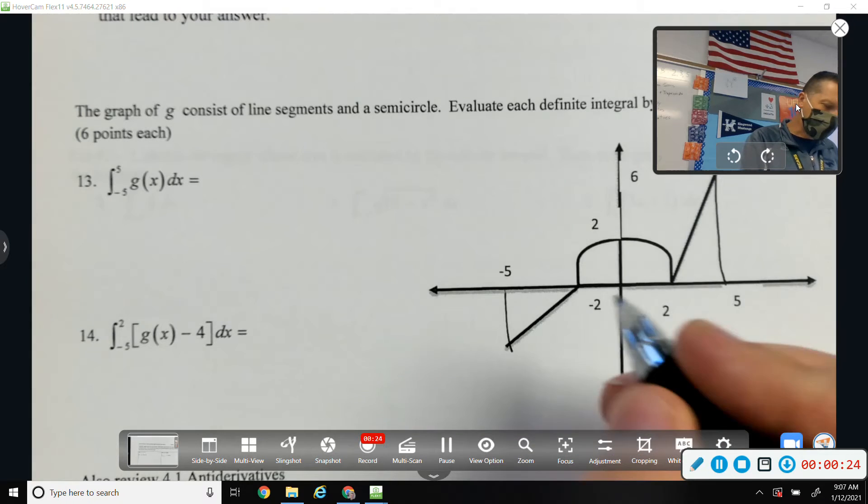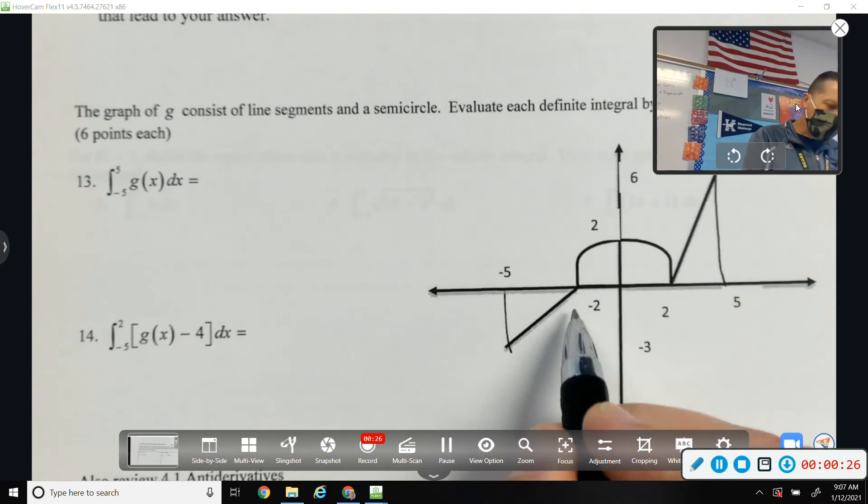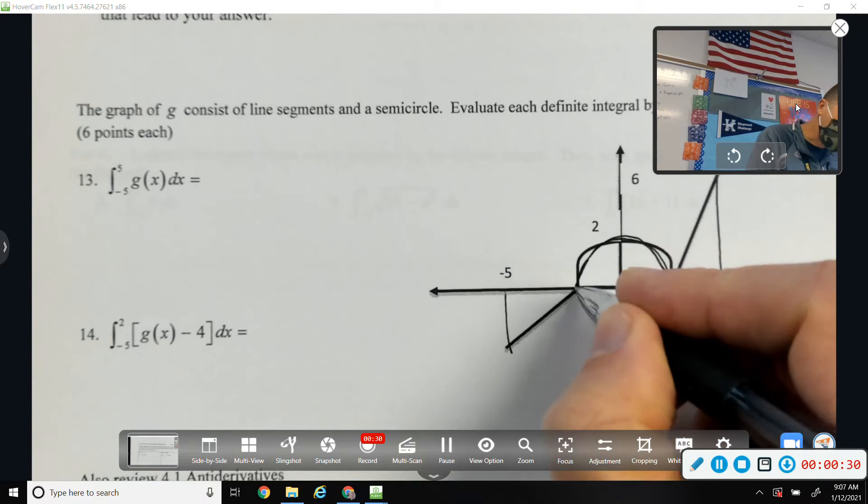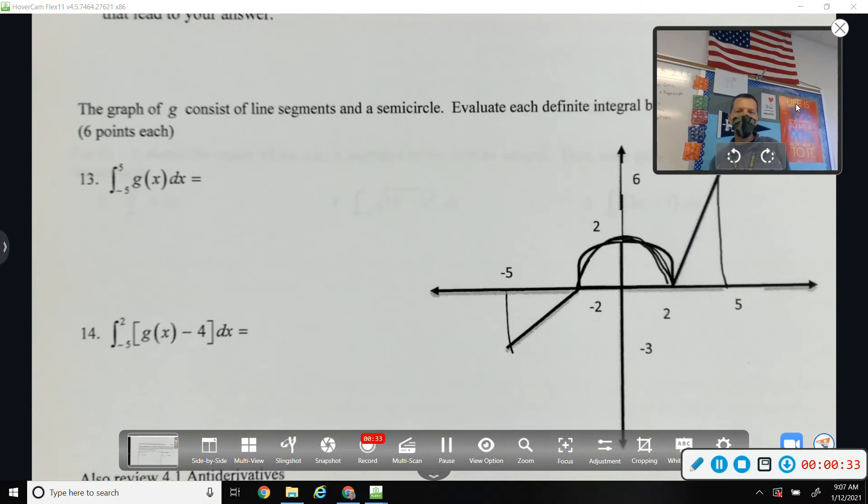Let's start adding up these areas. This is a semicircle, not the best semicircle you've ever seen in your life, with radius 2.